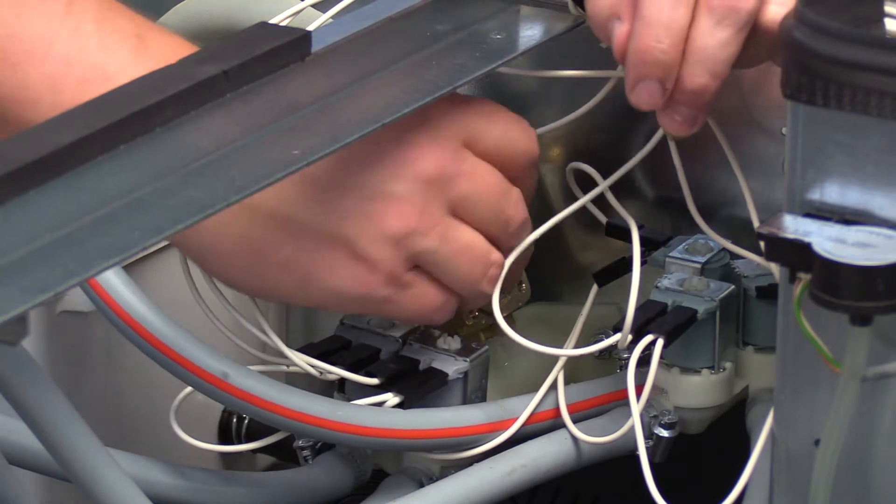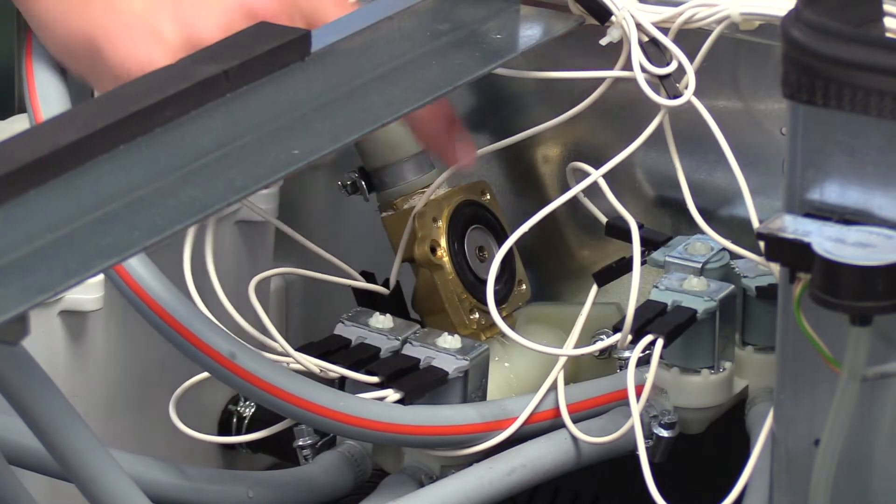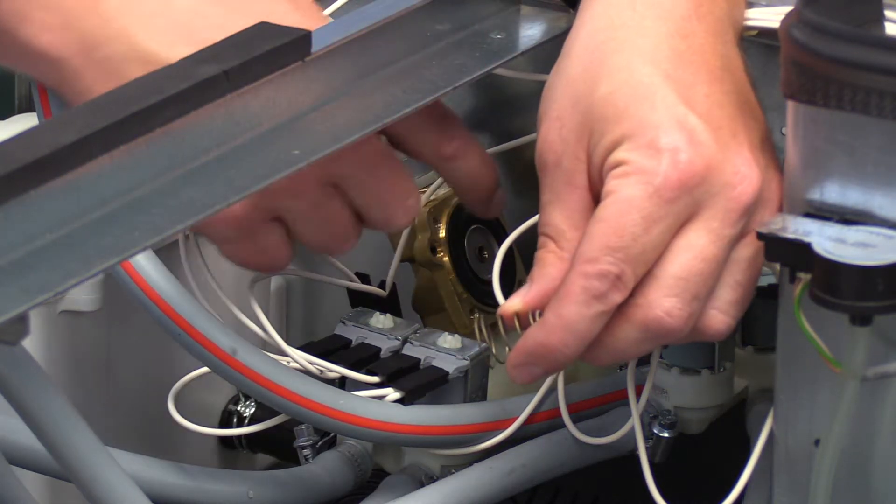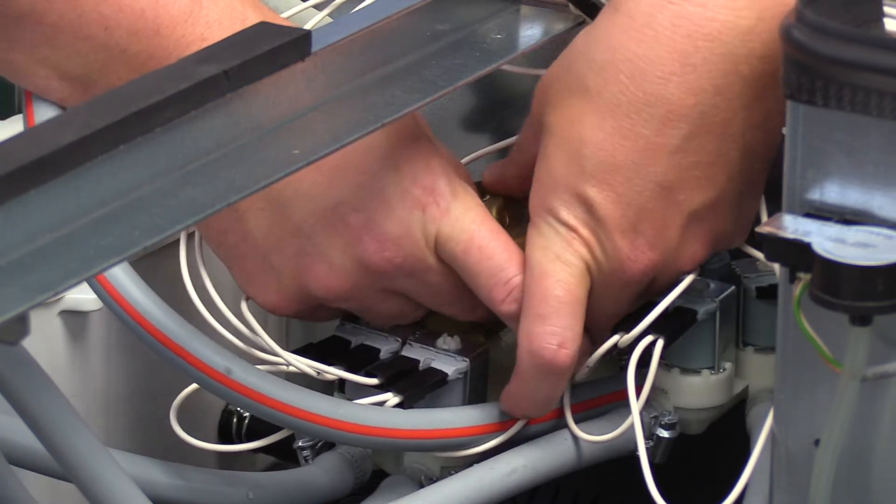Reinstall the rubber diaphragm with the equalizing orifice on the valve. The concave part of the diaphragm will face out. Place the spring on top of the diaphragm with the wide end of the spring centered on the diaphragm.